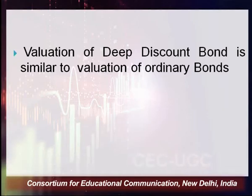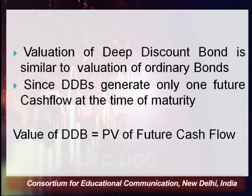Students sometimes get confused about the process of computing the value of a deep discount bond. The answer is it is almost the same as a normal bond, with one slight difference: in the case of a deep discount bond, you receive the maturity value only once. Since DDDs generate only one future cash flow at the time of maturity, you calculate the present value of that cash flow — and that is the value of the DDB.